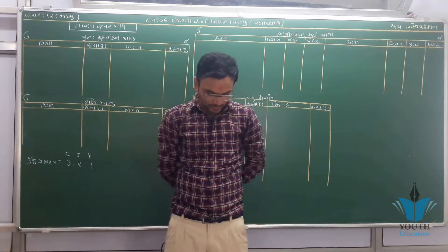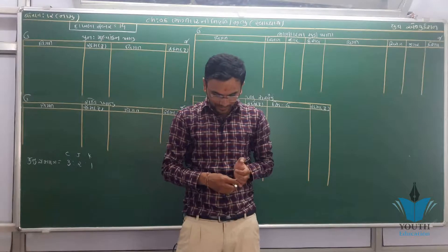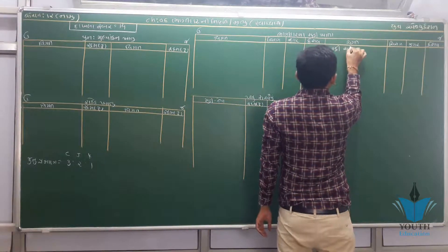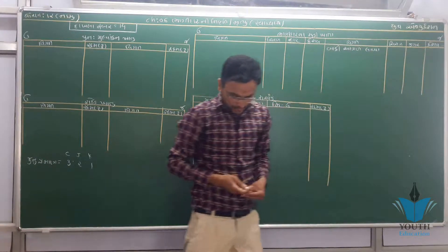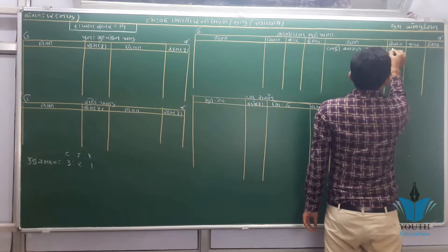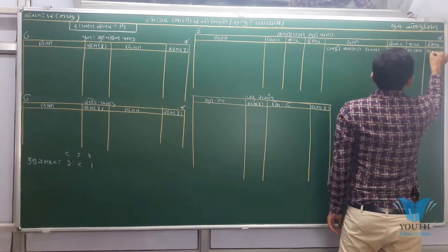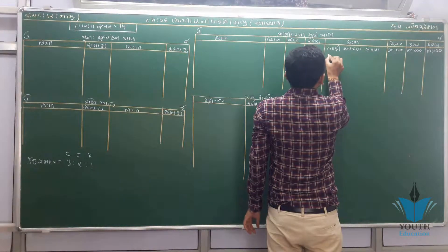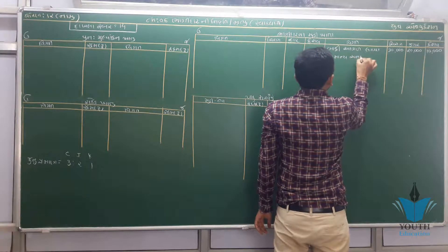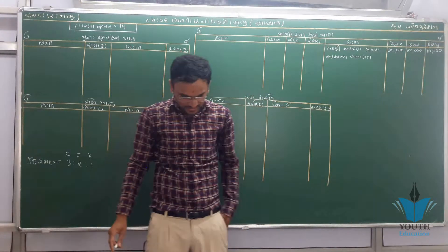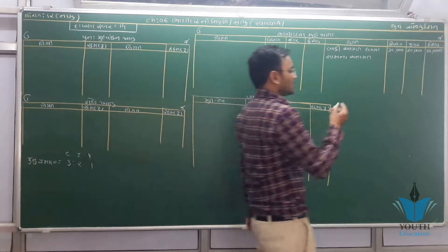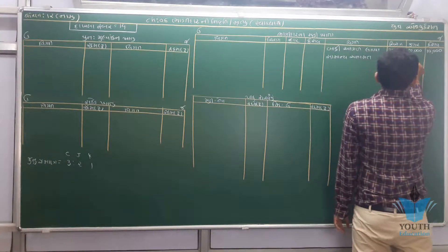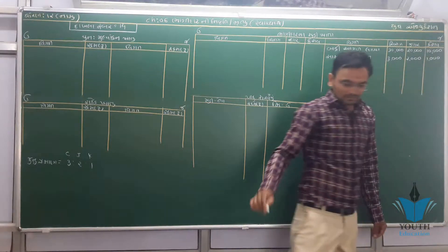તારીખ 31મીના રોજ પાકુ સરવૈયું નીચે પ્રમાણે આપેલ છે. સૌ પ્રથમ પાક સરવૈયામાં 20,000 અને 10,000 રૂપિયા છે. સામાન્ય અનામત ભાગીદારોને વહેંચવાની છે. ચીરાગ-જીગરને 2,000 અને કેશાવને 1,000 રૂપિયા.